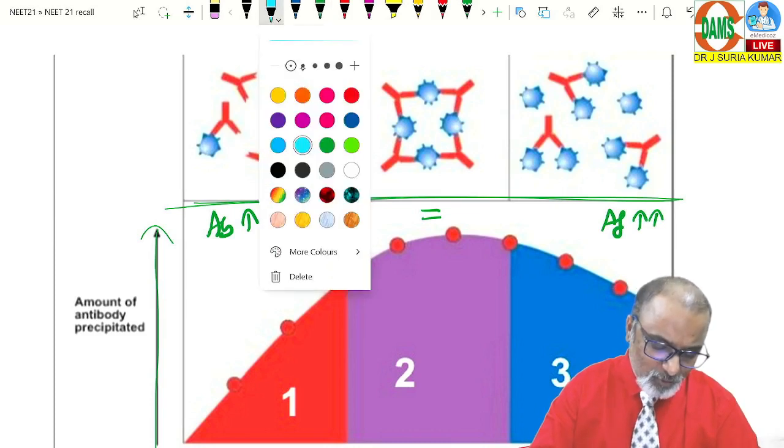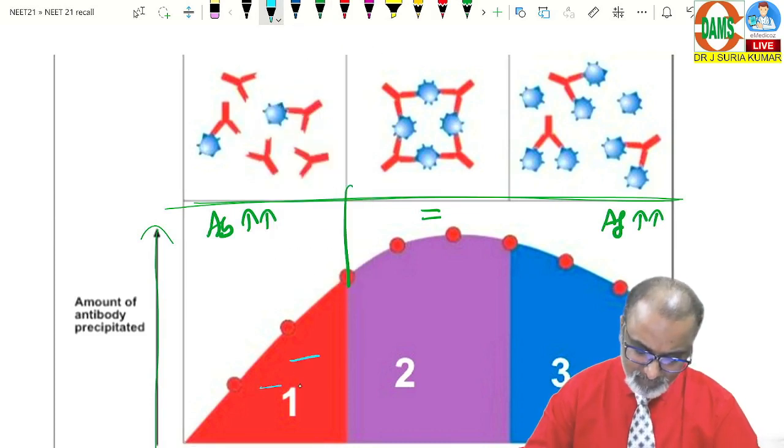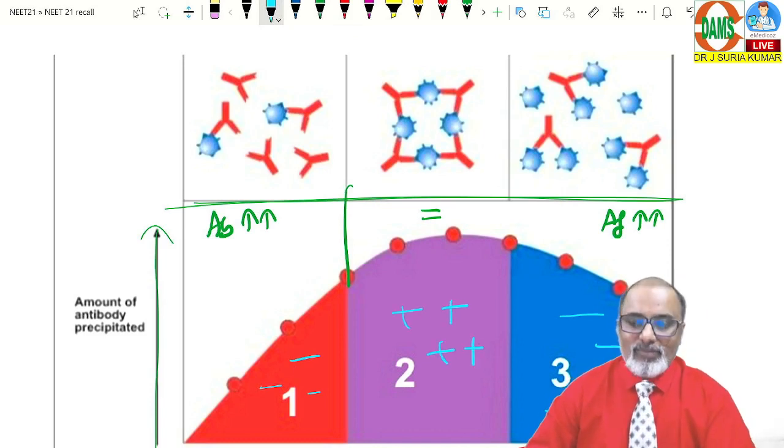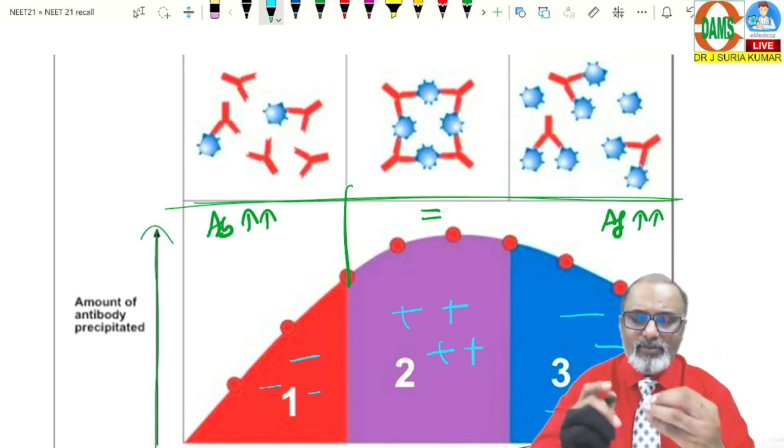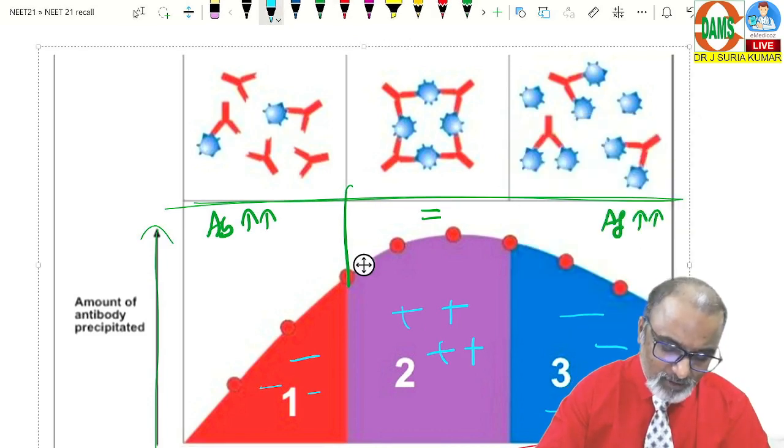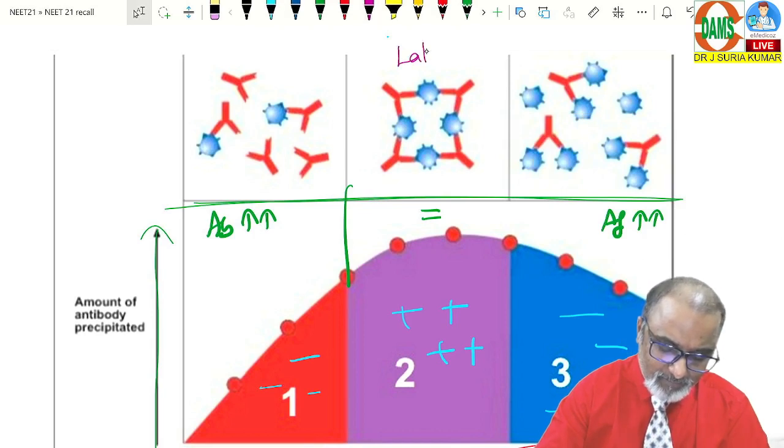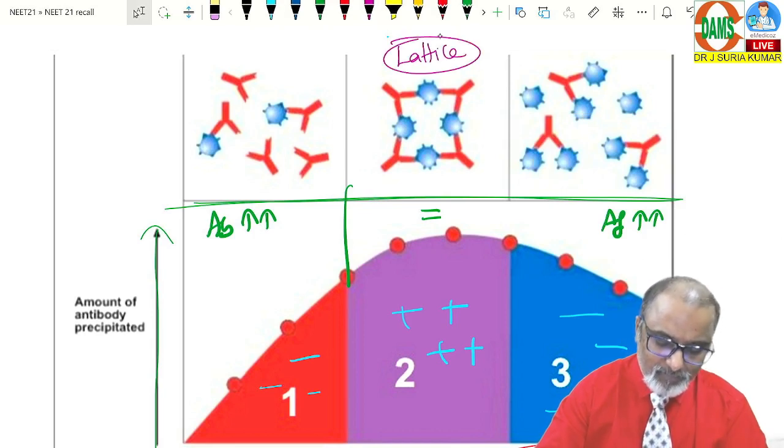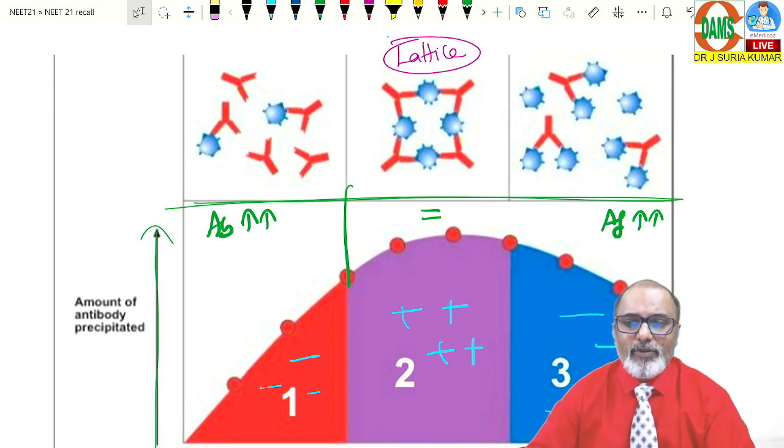So, these two zones, you won't get the reaction. You can't get the reaction. In this zone, you can't get the reaction. Because in the optimal concentration, we are getting lattice formation. We call it as lattice formation. The lattice formation seen in optimum concentration.